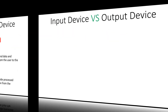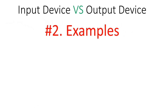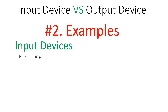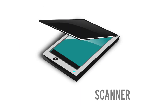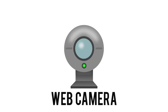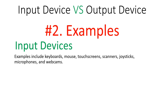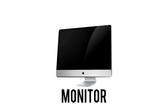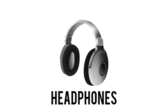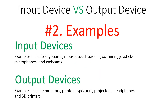Examples of input devices include keyboards, mouse, touch screens, scanners, joysticks, microphones, and webcams. Examples of output devices include monitors, printers, speakers, projectors, headphones, and 3D printers. These output devices help provide results in text form, video form, or printed format.